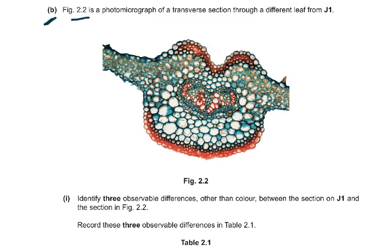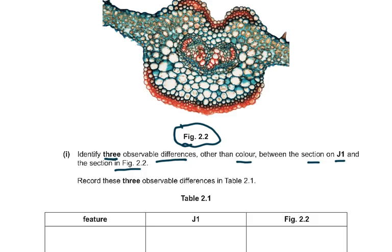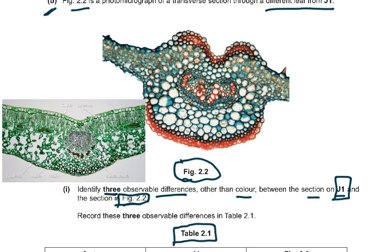Coming to part b: figure 2.2 is a photomicrograph of a transverse section through a different leaf from J1. Identify three observable differences — other than color — between the section on J1 and the section in figure 2.2. You record answers in table 2.1, comparing J1 and figure 2.2. I'll try to find a slide similar to the Cambridge slide to demonstrate the comparison.